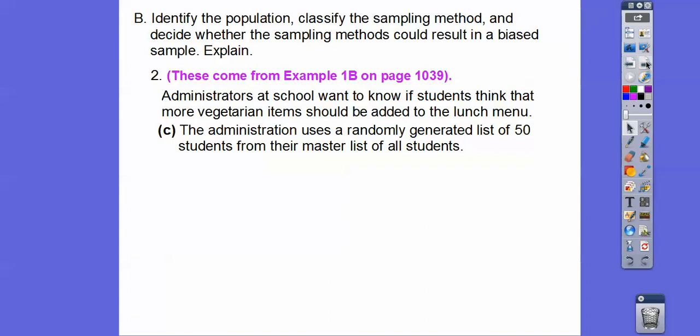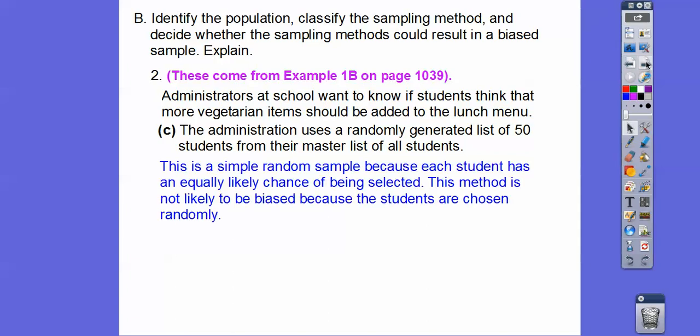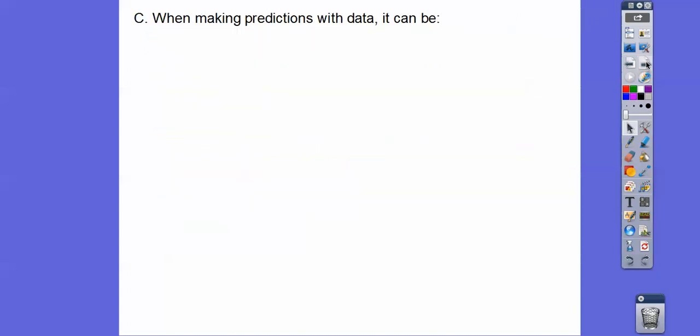How about this? The administration uses a randomly generated list of 50 students from their master list of all students. Well, this is a simple random sample because each student has an equally likely chance of being selected.